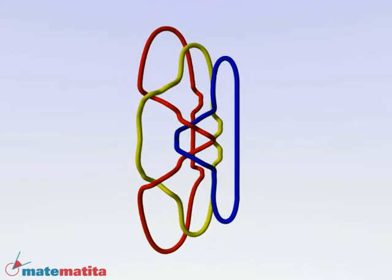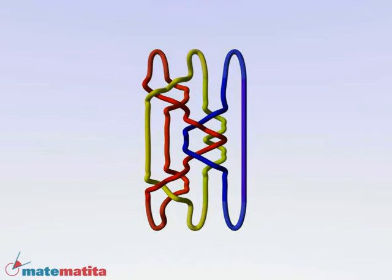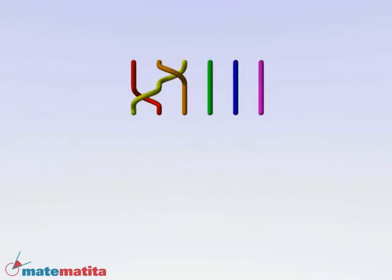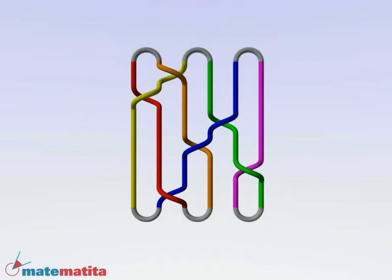If we move the new strands behind the old ones, we obtain a different braid, closed in a new way. This closure can be done on each braid with an even number of strands. It is called the plat closure. Again, closing a braid as a plat, we obtain a knot.